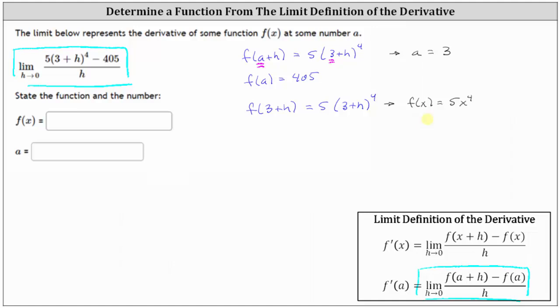So this is what we're looking for. But let's also verify that f of a, or in this case f of three, equals 405.